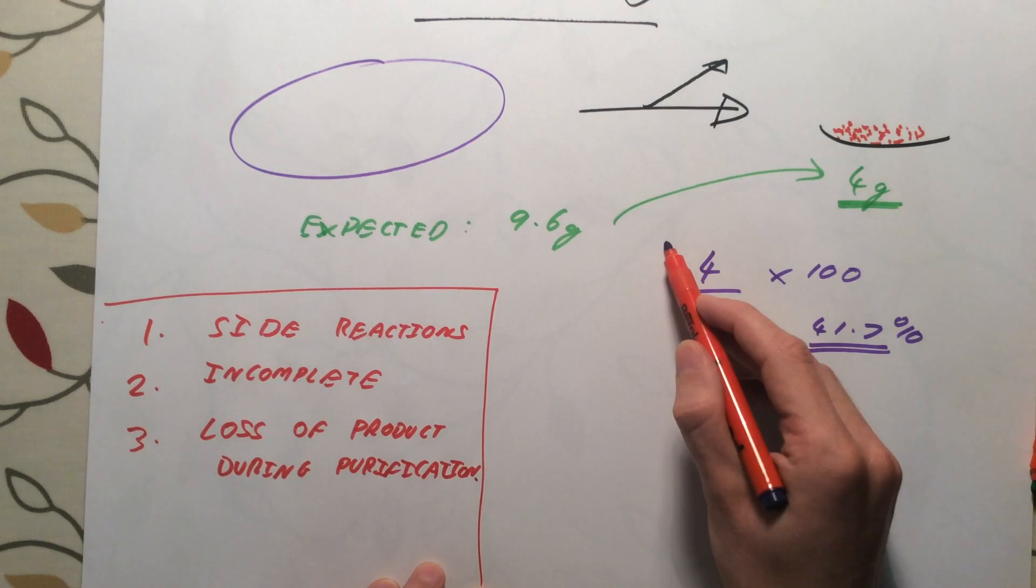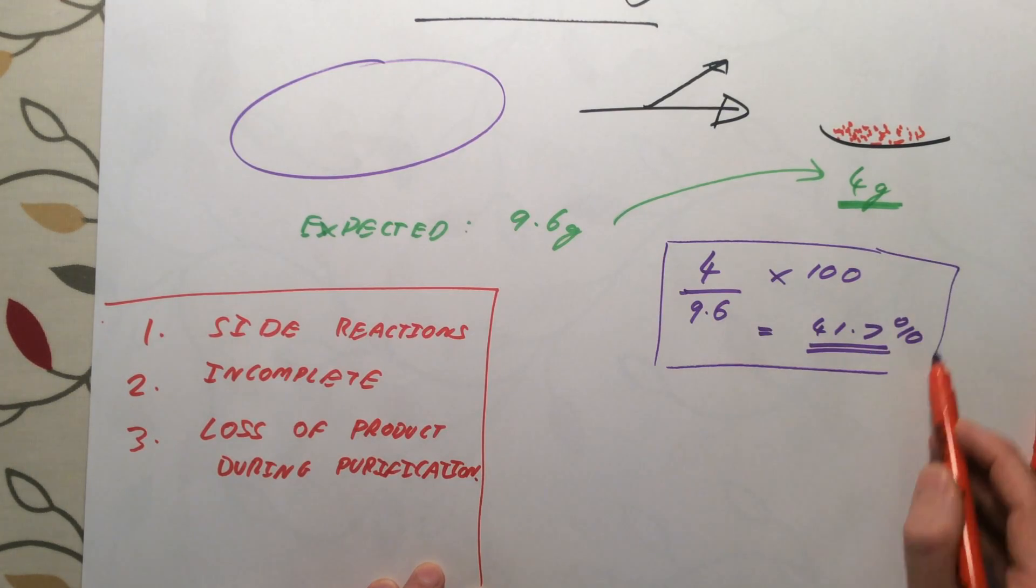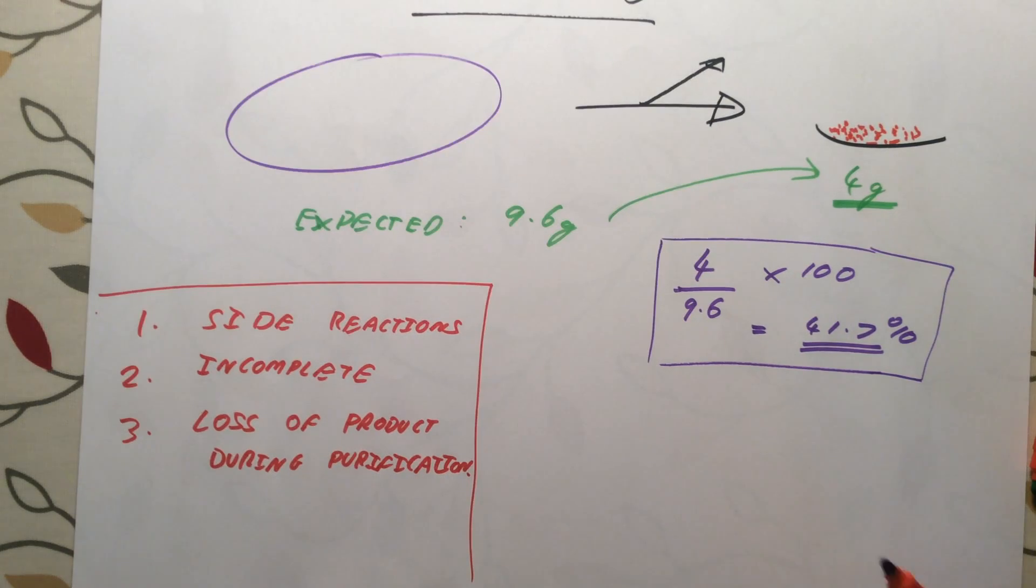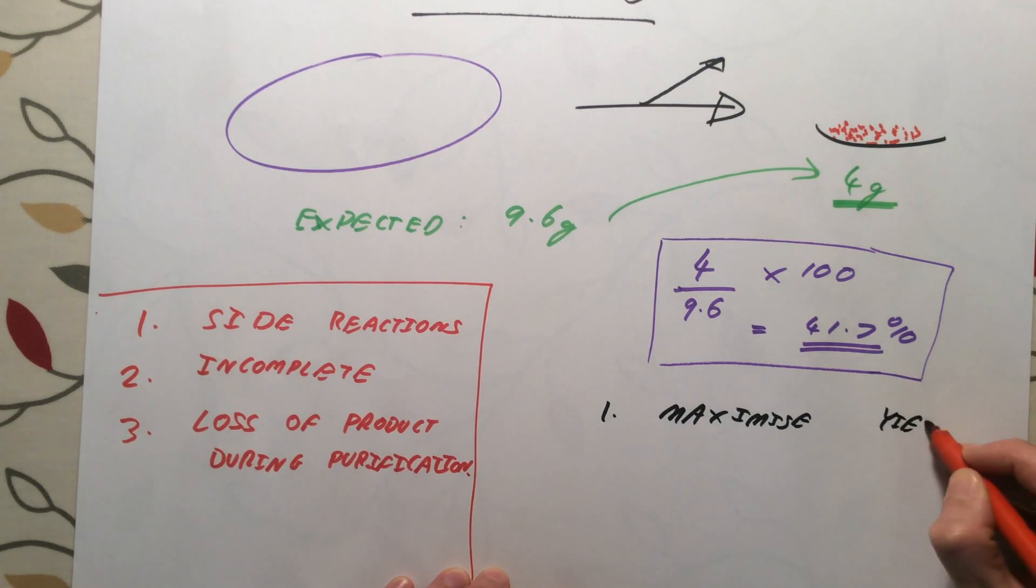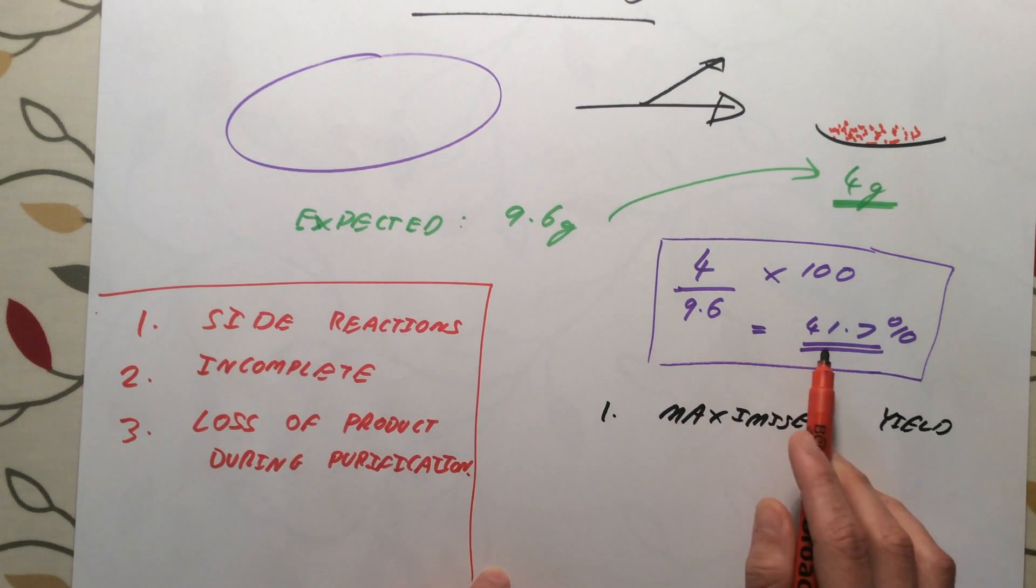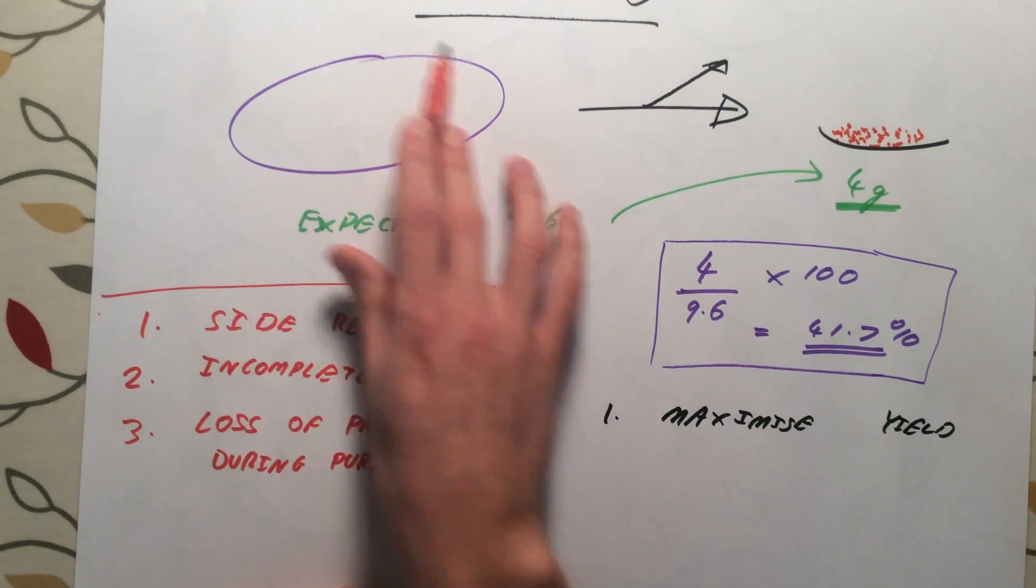Last thing we need to know for this chemistry course is basically just a few ideas about how chemists, if they're designing a process in industry, want to design their reaction to be able to get as efficient as possible. The first thing that chemists want is to maximize the yield of your reaction, so you want to be able to get as high a percentage yield as possible so you are turning as much of the reactants that you're starting with into products as you possibly can.